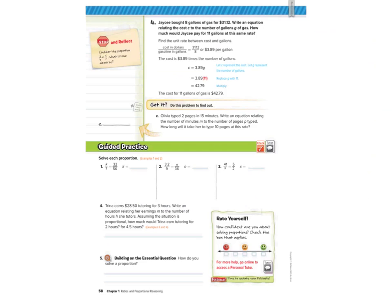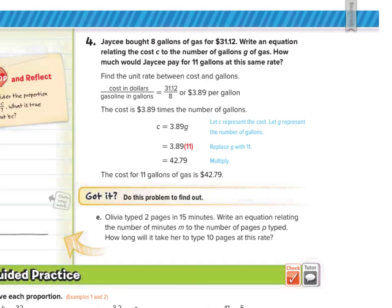In guided example 4, JC bought 8 gallons of gas for $31.12. Write an equation relating cost C to the number of gallons G, and find the cost for 11 gallons. The unit rate: $31.12 over 8 gallons is $3.89 per gallon. So cost C equals $3.89 times G. Substituting 11 for G, we get $3.89 times 11 equals $42.79. The cost of 11 gallons of gas is $42.79.